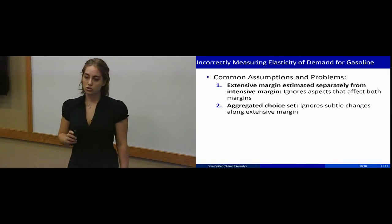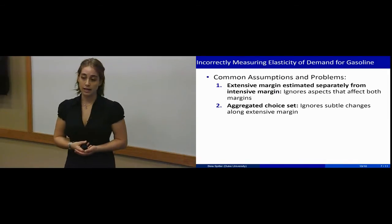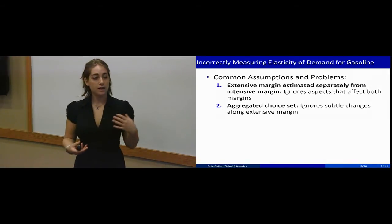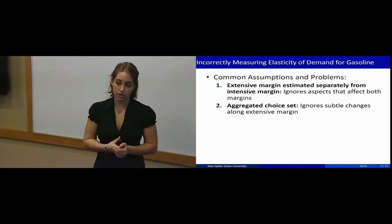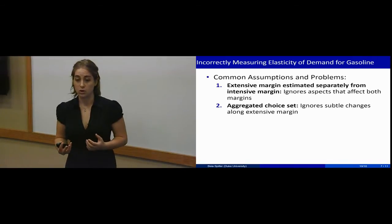The second thing that many researchers do is they aggregate the choice set into large groups such as SUV, van, car, and truck in order to facilitate estimation. However, this type of aggregation actually ignores a lot of the subtle changes that are happening along the extensive margin.